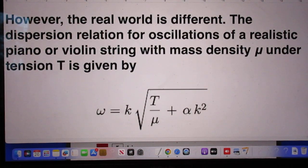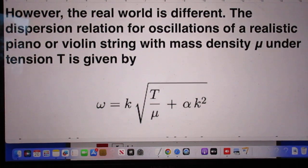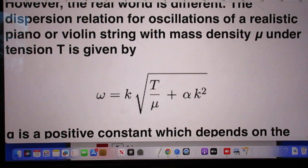However, the real world is different. The dispersion relation for oscillations of a realistic piano or violin string with mass density μ under tension T is given by this equation. This T here, obviously, is not the time for one oscillation, it is the tension in the string.